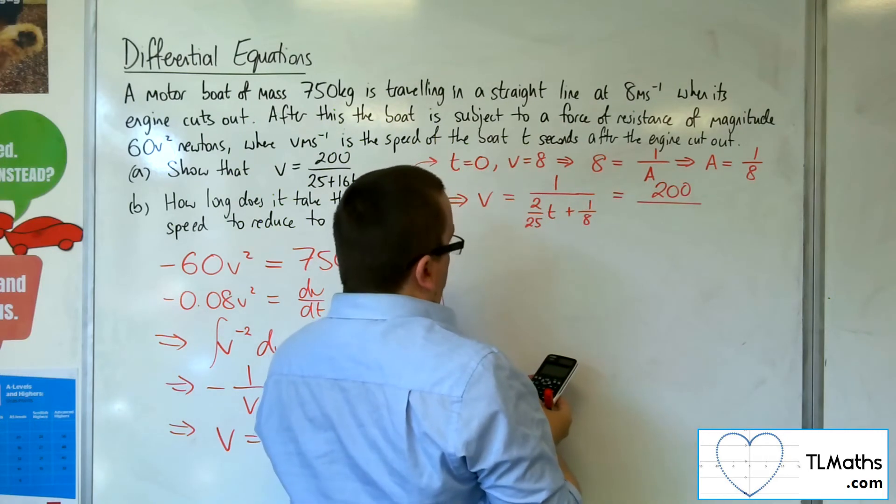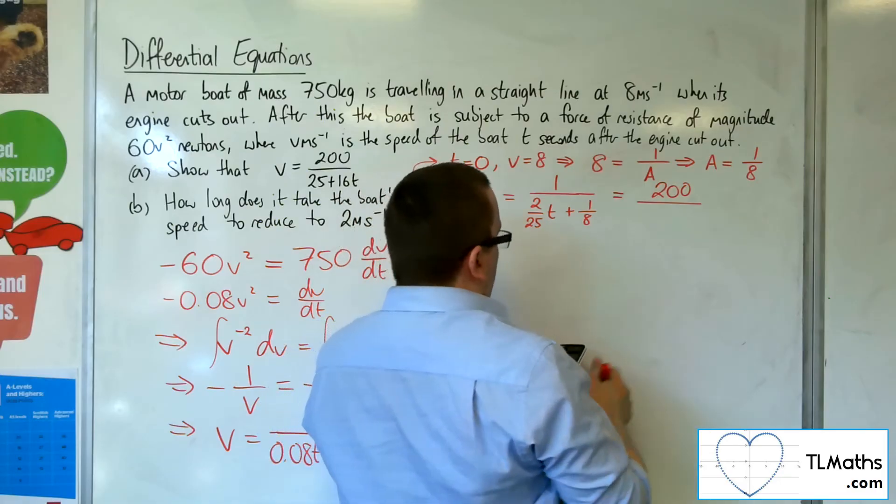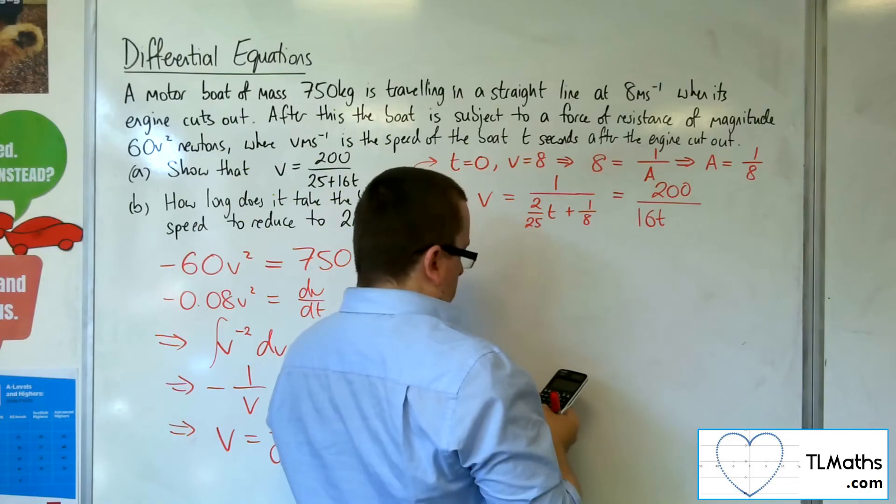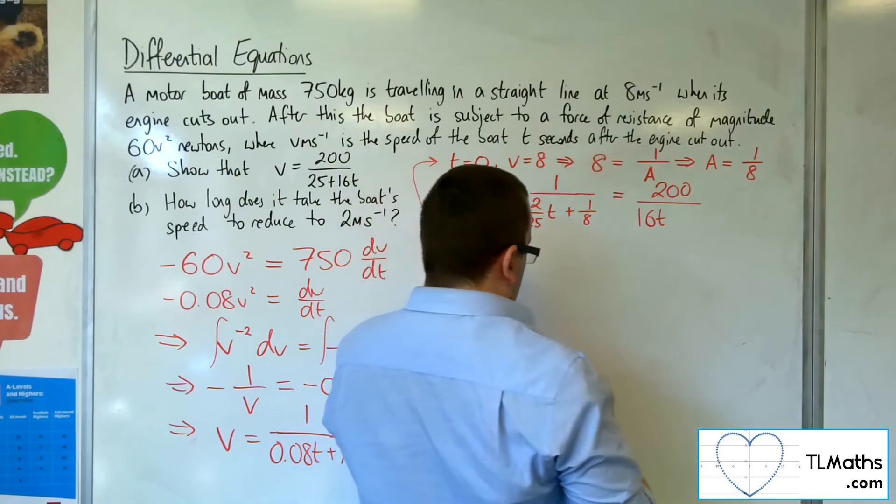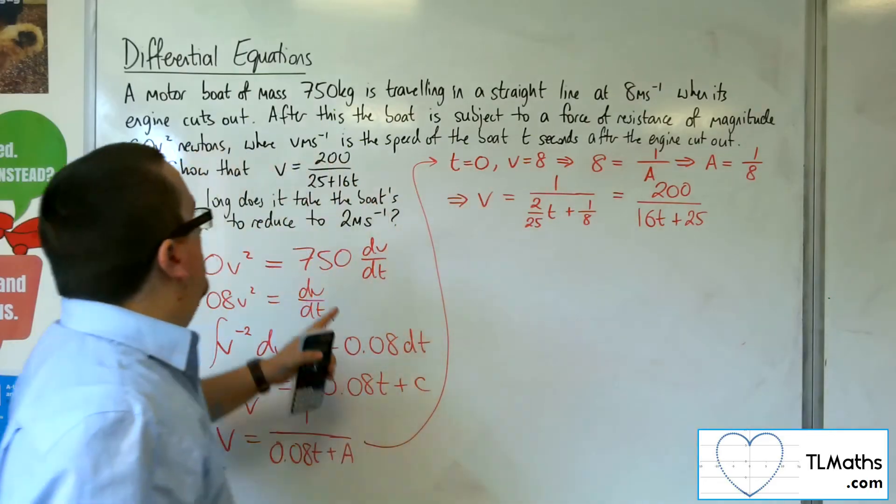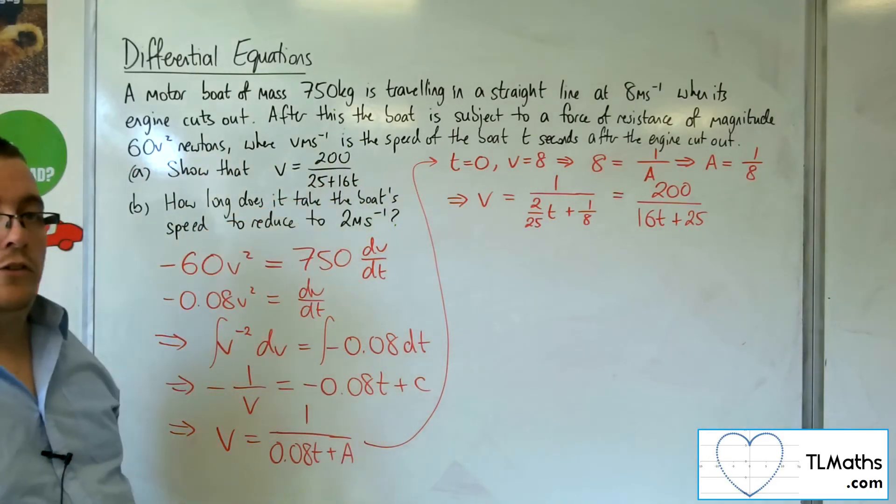Well, 200 lots of 2 over 25 is 16, so 16T, and 200 lots of 1 over 8 is 25, so I get precisely what I was asked to find there.